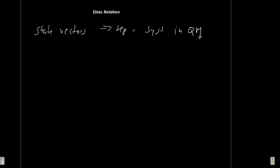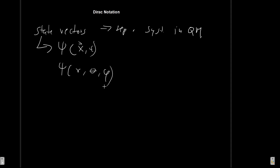The problem is that when we want to actually write down the form of these state vectors — let's say some psi — we need a representation. This could be in Cartesian coordinates depending on time, or we might write it as a function in spherical coordinates r, theta, phi, for example. There are several ways we can represent a state vector, and we need to choose some representation first before we can begin to work with it.